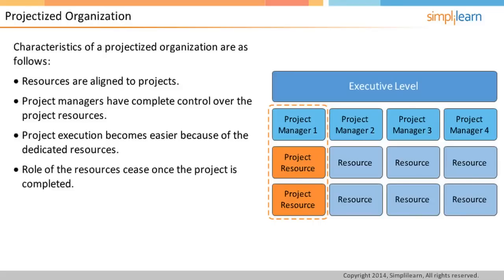Secondly, highly specialized roles within a project may not be fully occupied all the time. For example, a purchase executive may have work for selected periods on a project while purchase activities are going on. However, for the rest of the period, their capability may not be optimally utilized. There is less scope for functional specialization as the project boundaries limit the kind of work for the resources.